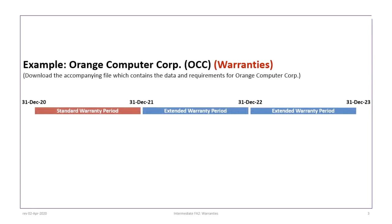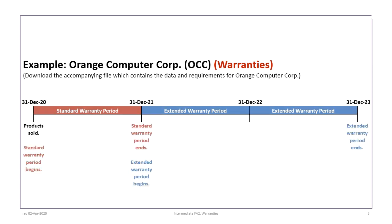This example is based on the Orange Computer Corp problem, so please make sure that you download the correct file and preview the information before proceeding. This example is about a company that includes a standard product warranty with the sale of its product — a typical warranty you would get if you bought a computer or a phone. There is also a two-year extended warranty period, shown on a timeline. All sales are deemed to take place on December 31, 2020.